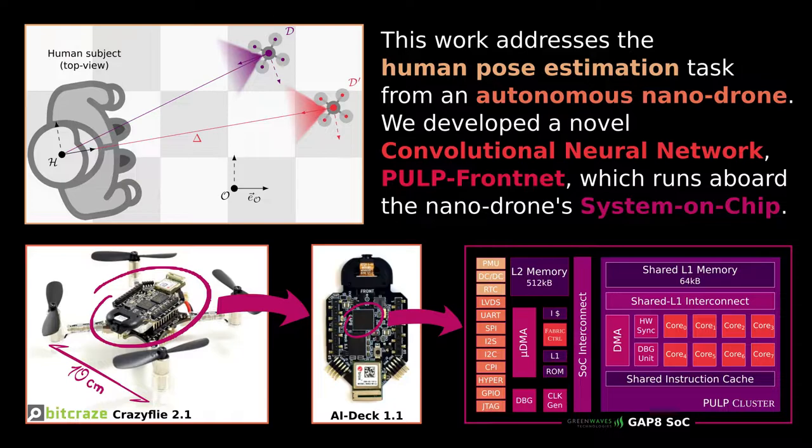In this work, we present a novel convolutional neural network called PULP FrontNet. Our CNN addresses the human pose estimation task, running aboard a nano-sized unmanned aerial vehicle, and predicting the subject's relative pose from the images acquired with a low-resolution onboard camera.